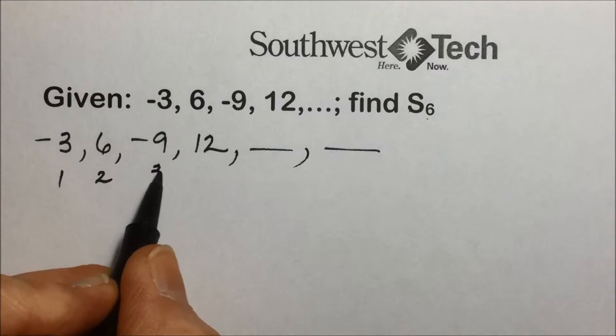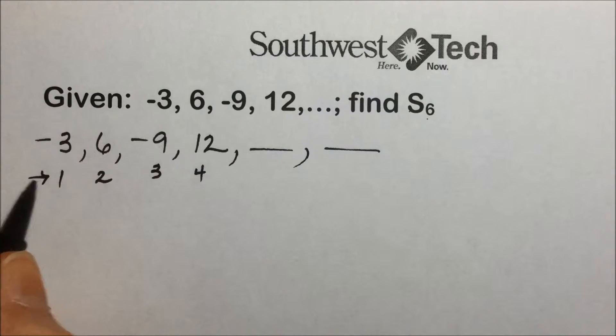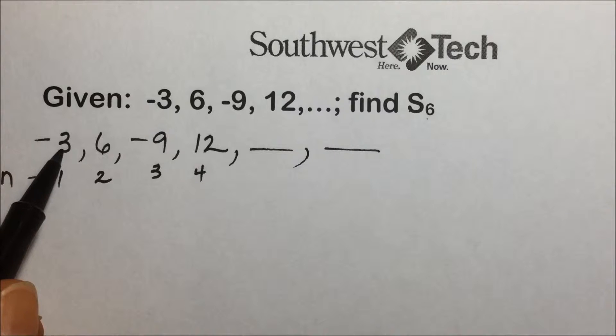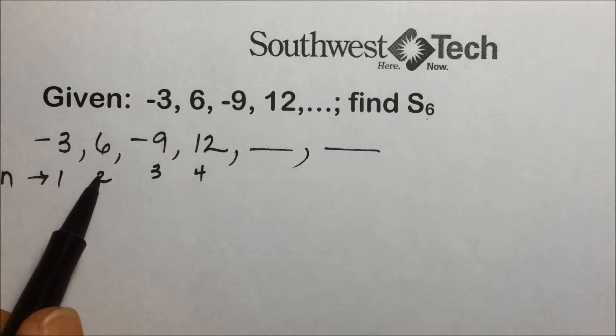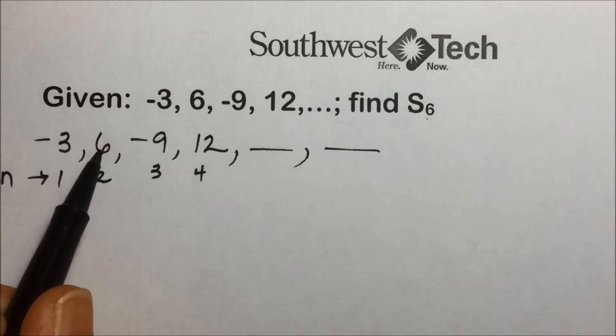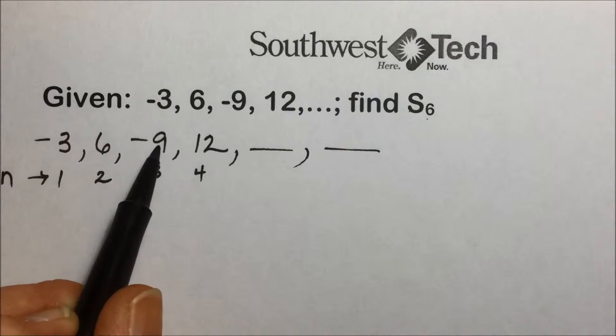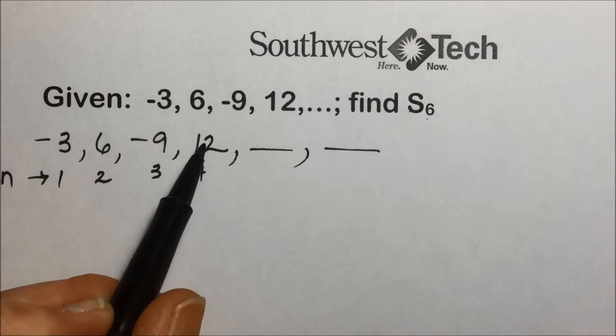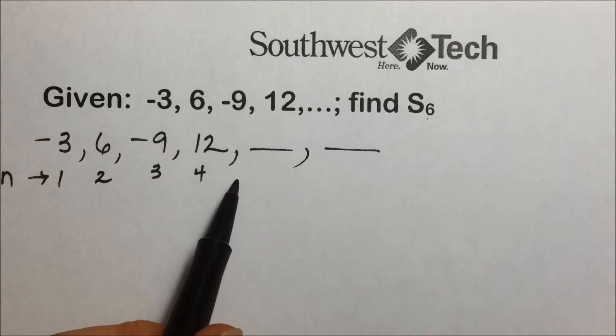So looking for a pattern, it helps to identify what the term number is and what's happening to those particular values. We have 1. Our first term is a negative 3. We have 3 being multiplied by 2. We have 3 times 3 is giving us 9. 3 times 4 is 12. That's looking good.